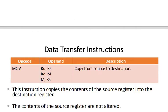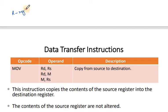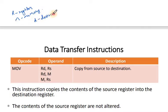The first instruction is MOV. The opcode is MOV and the operands are RD and RS, or RD and M, or M and RS. Here, R stands for Register, M stands for Memory location, D stands for Destination, and S stands for Source. So MOV RD, RS means copy from source register to destination register. For example, MOV A, B — B is the source and A is the destination.